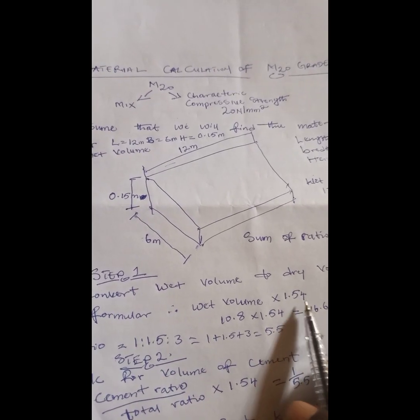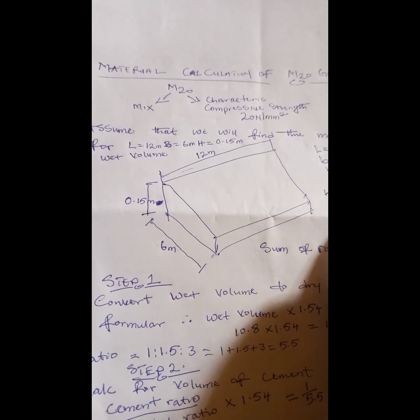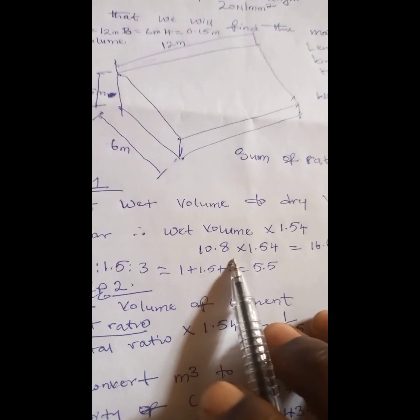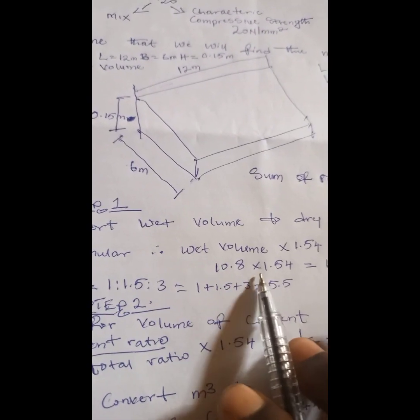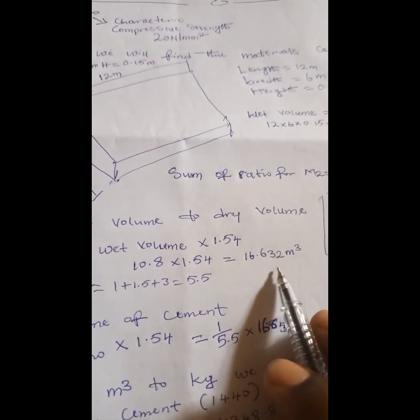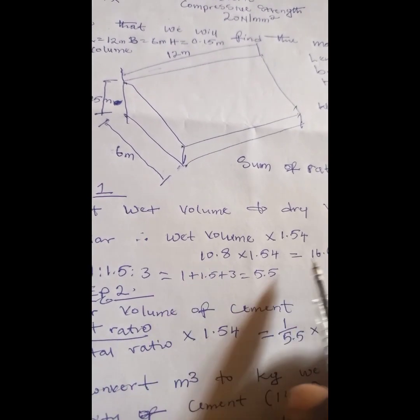To convert your wet volume to dry volume, you multiply by the factor of 1.54 — that means you are adding 54% to it. So we multiply the volume of 10.8 by 1.54, giving us 16.632 cubic meters. That is, we have added 54% to our wet volume to get our dry volume.